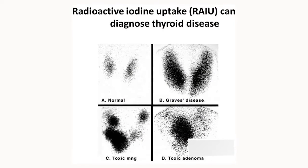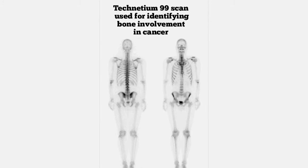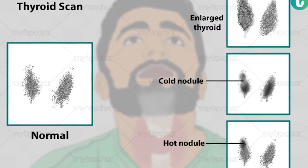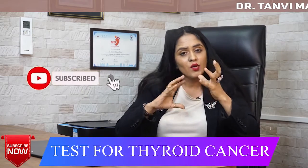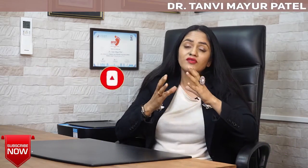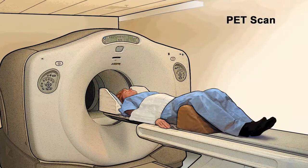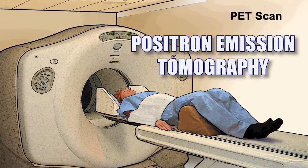We also ask patients to undergo specialized radioactive iodine scans. In this scan we mainly use radioactive dyes called the 99m pertechnetate scan, also known as a thyroid scan — I have made a detailed video on that. Sometimes the iodinated dye can give a misinterpretation of the report, so in that situation we do another scan called a PET scan — positron emission tomography — which can also indicate the status of thyroid cancer.